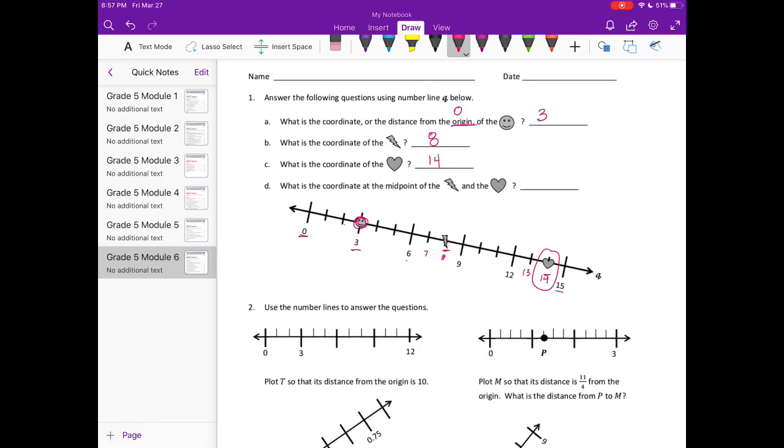What's the coordinate at the midpoint of the lightning bolt and the heart? So one way that we could find midpoint is just by, I'll cross one off there and then cross one off there, cross one off on that side, cross one off on that side. So we're left with this which is 9, this is 10, this is 11.